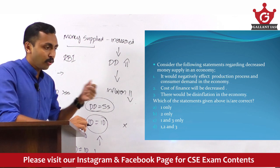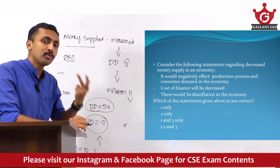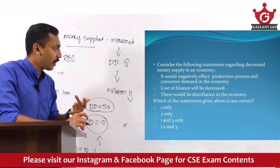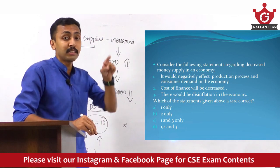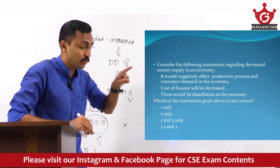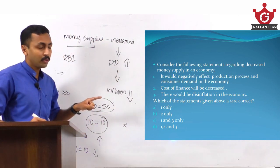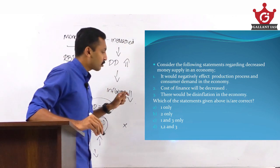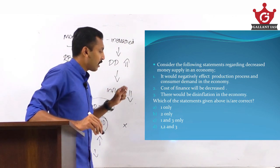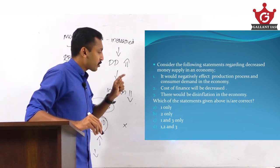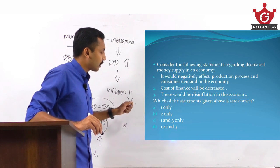What is the cost of money? Normally we talk in terms of interest — that is what cost of finance means. So cost of finance will increase if money supply goes down. Therefore the second statement — that cost of finance will be decreased — is wrong. Since the second statement is wrong, you can eliminate all options which contain statement 2, that is option D. The remaining options are A and C.